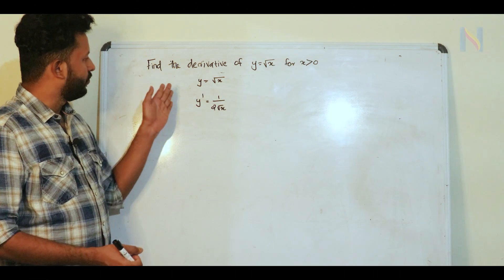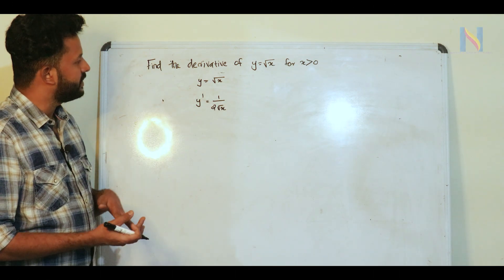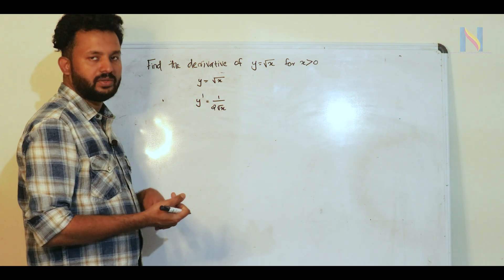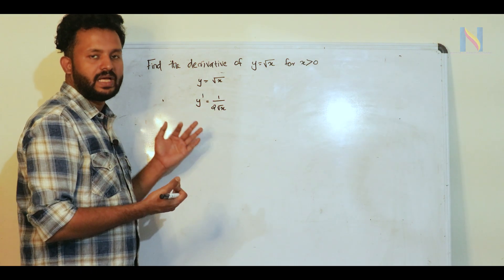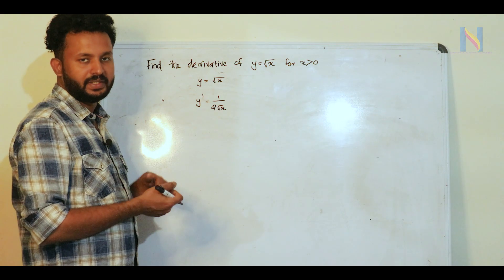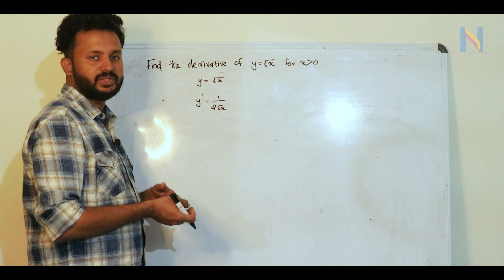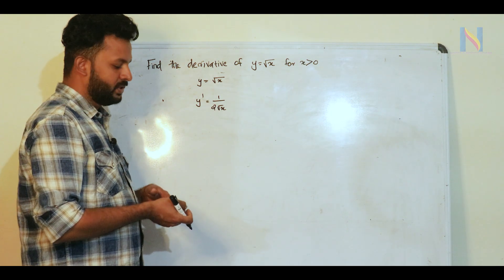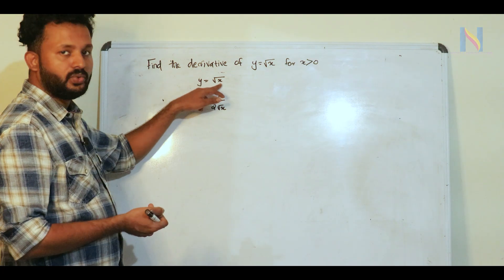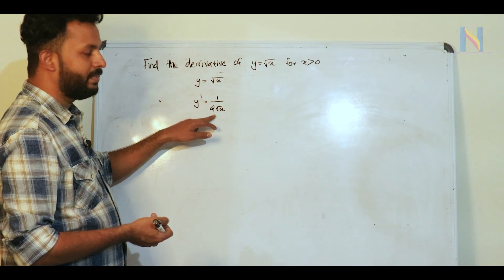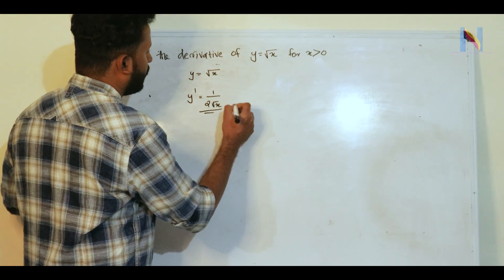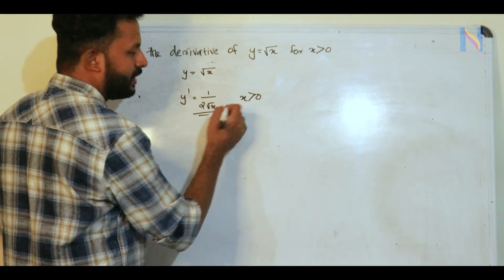The third question is: find the derivative of y = √x for x ≥ 0. We use the first principle. The direct result is that the derivative of √x is 1/(2√x), for x ≥ 0.